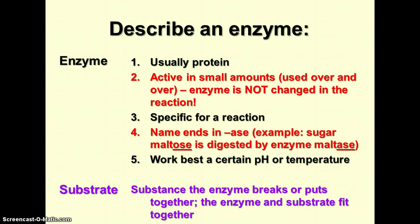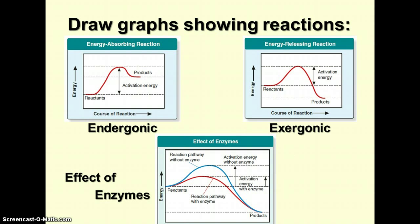Remember, the substrate is the substance the enzyme breaks or puts together. These graphs show the path of various kinds of reactions. Endergonic reactions are the ones that absorb energy. We have here the reactants beginning at a low level of energy, raised to the activation energy which causes the reaction to occur, and the products end up at a higher energy level than the reactants, showing that the reaction gains or absorbs energy.